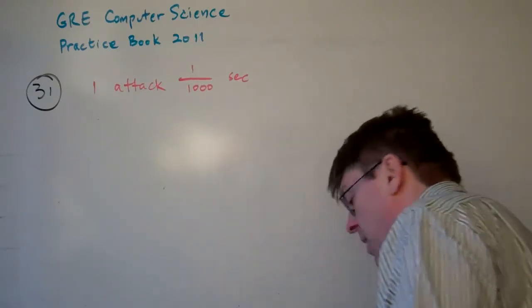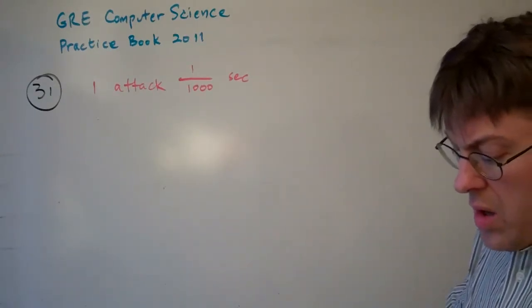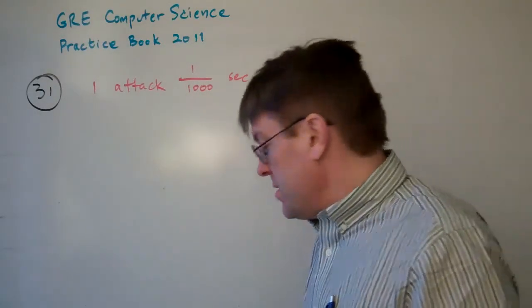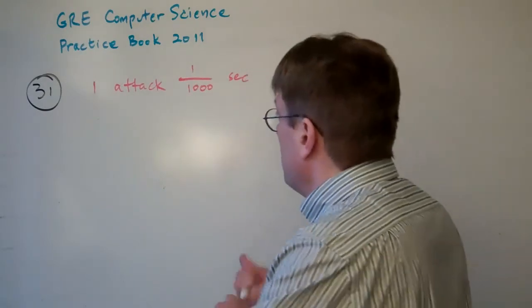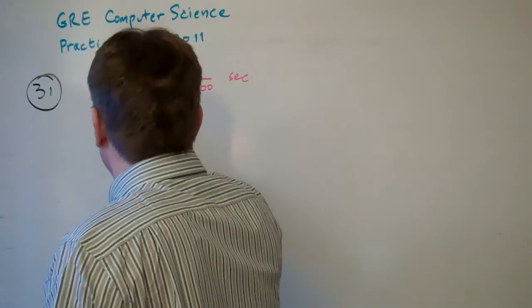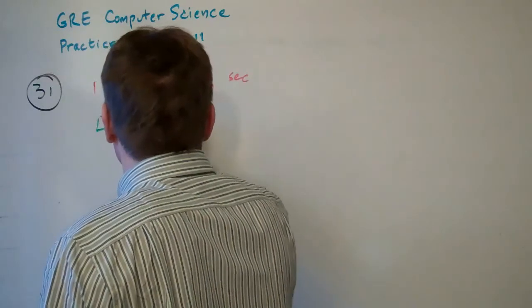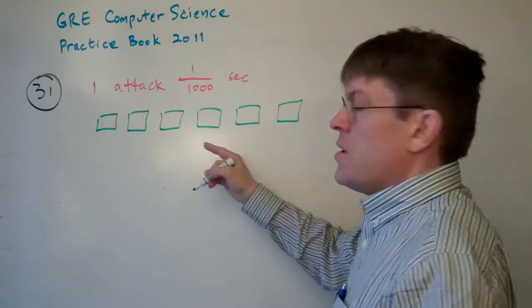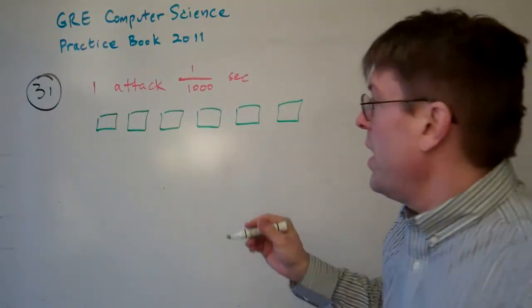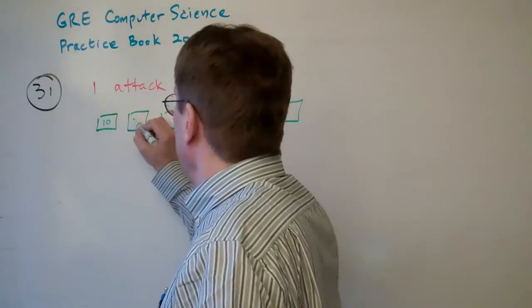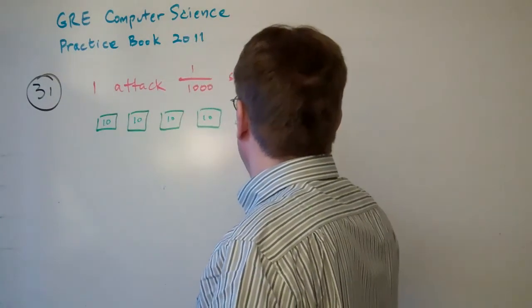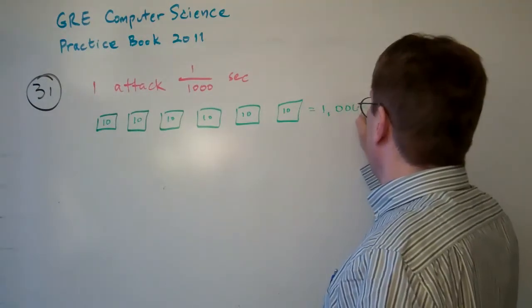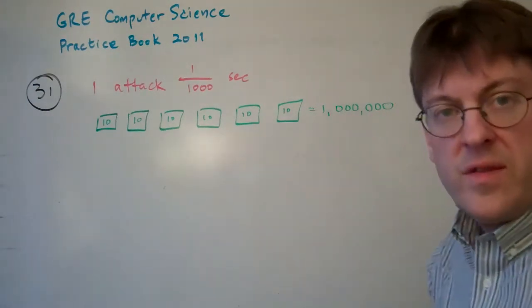The password contains 1 to 6 characters from a 10-symbol alphabet. Let's suppose we have 6 characters from a 10-symbol alphabet — so we can have 10, 10, 10, 10, 10, 10. That equals a million — 10 to the 6th.